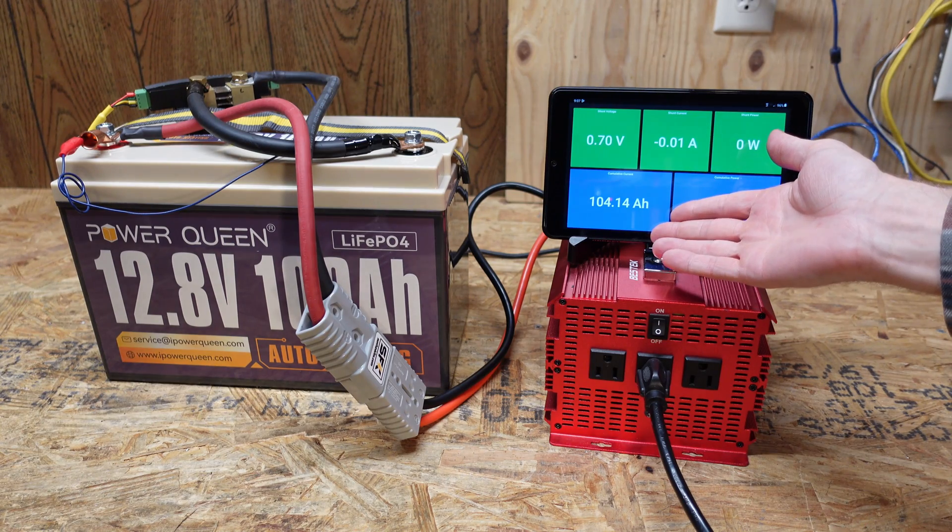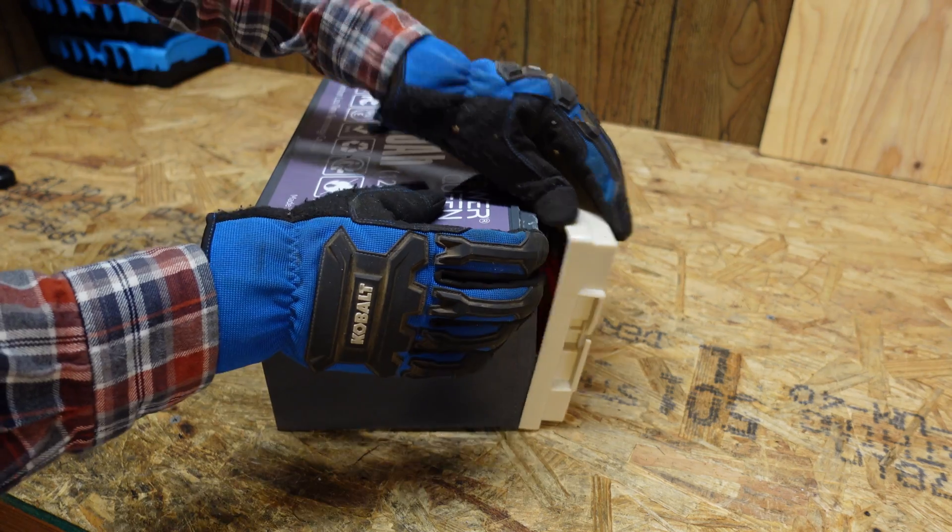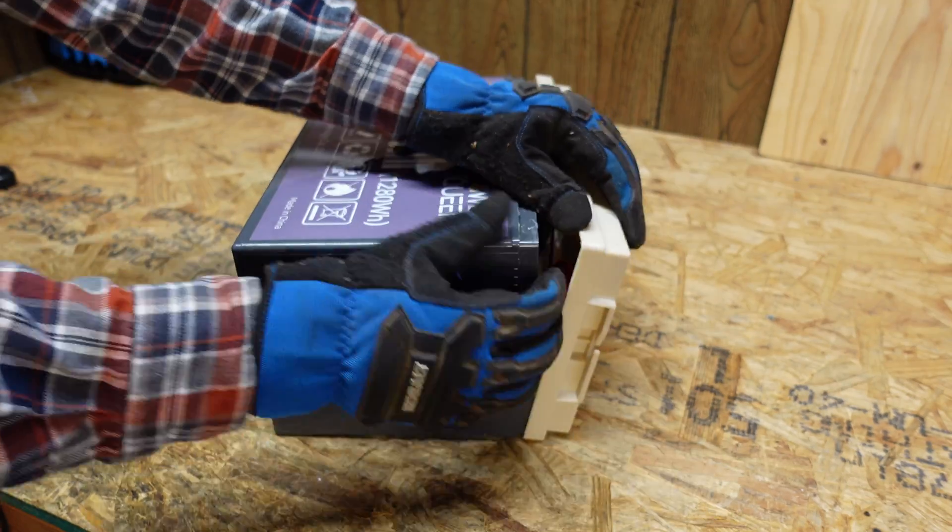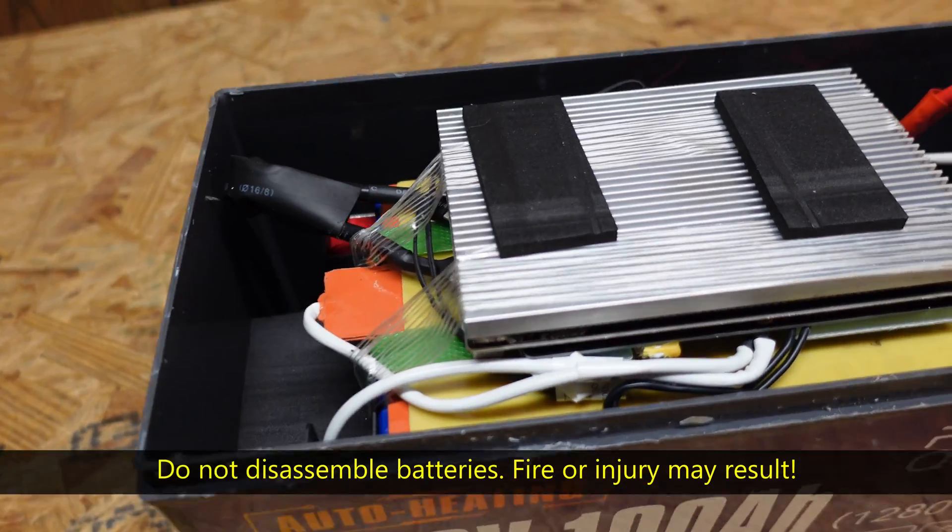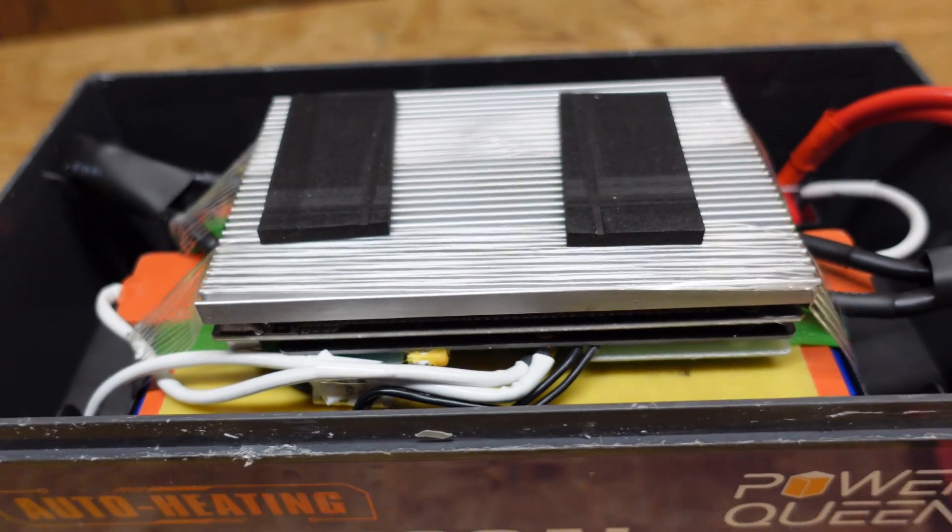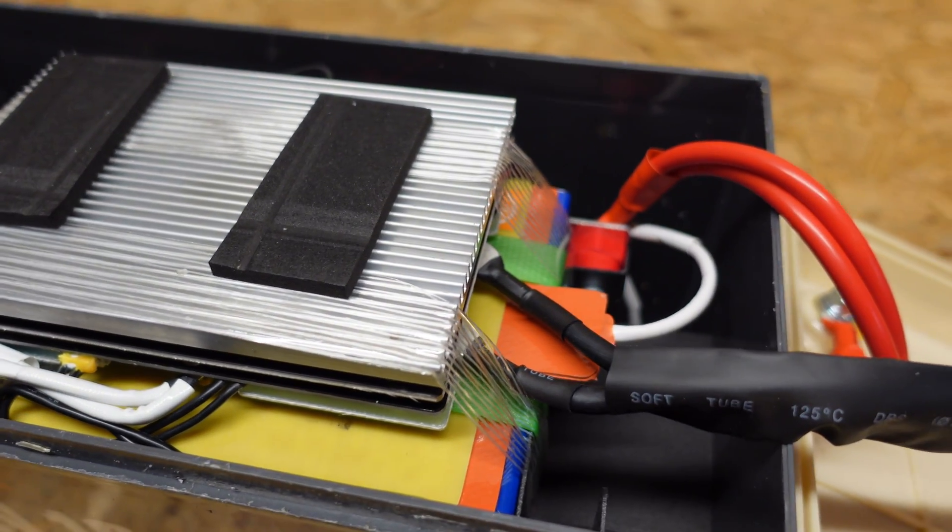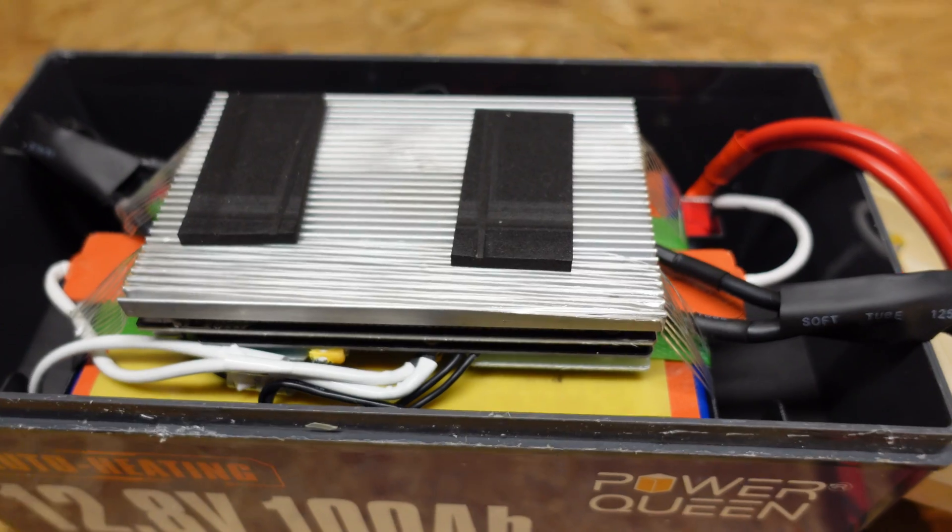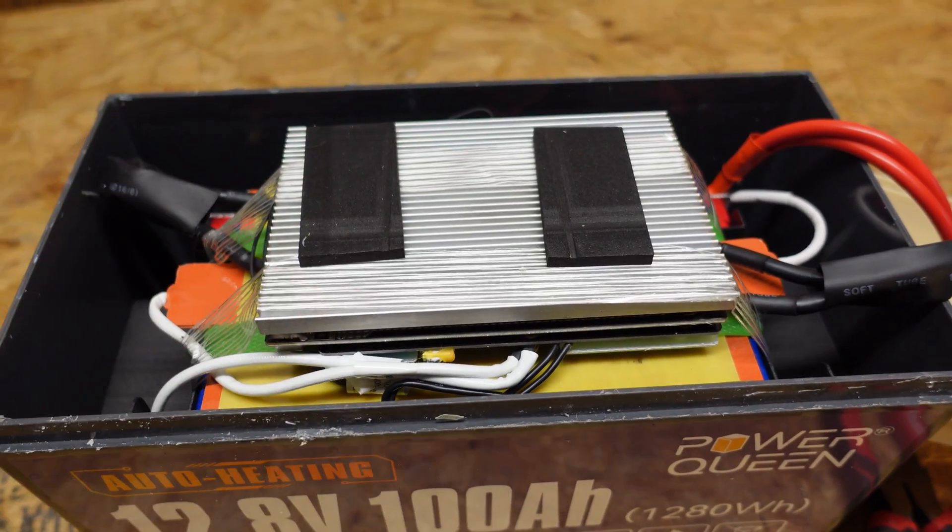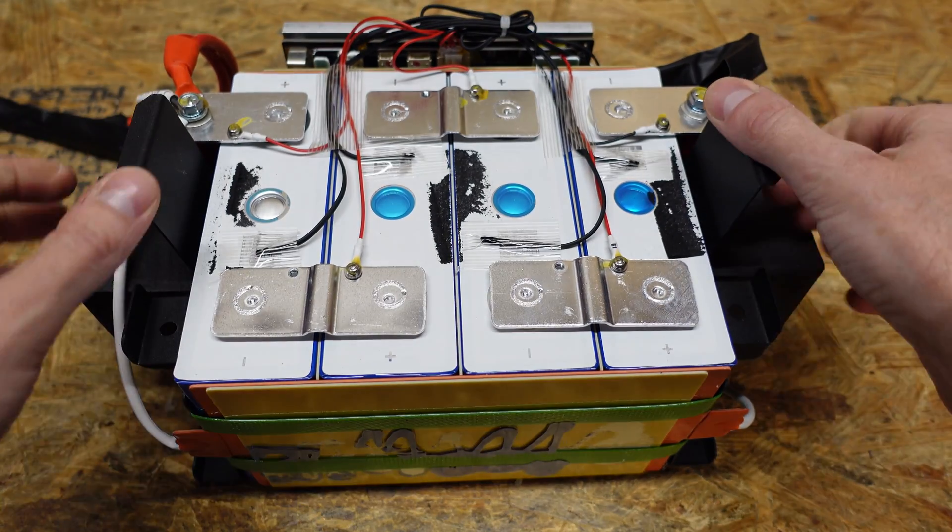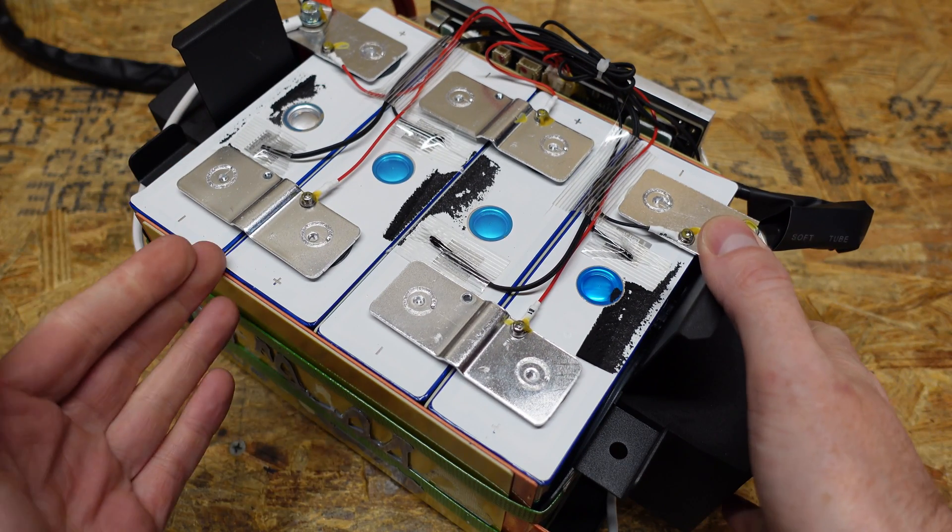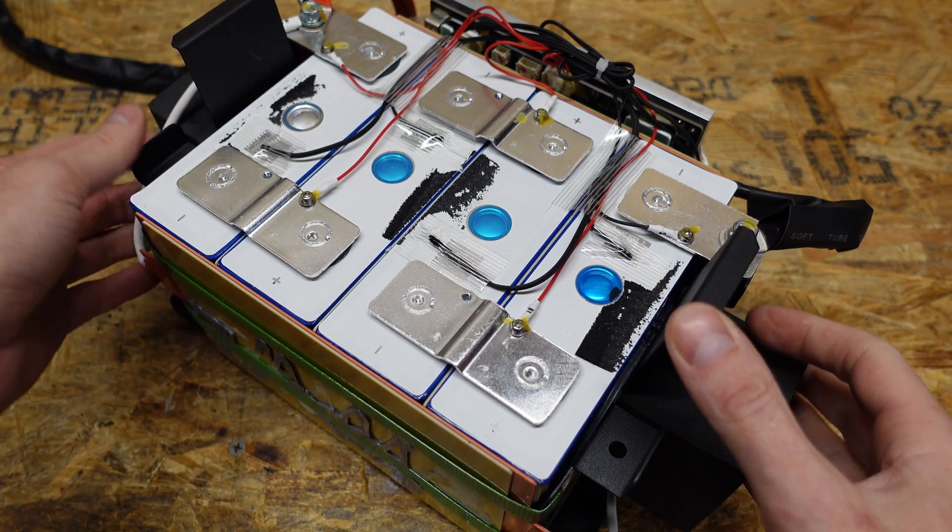And we tested in at 104.1 amp hours. Oh man that looks exactly like the BMS in the other battery we just reviewed. I was hoping that wasn't going to be the case but we'll see if this one behaves a little bit differently. Guys this is pretty much the same exact battery as the ampere time. It's just in a 100 amp hour format instead of a 200 amp hour format. There's just no way it's not.